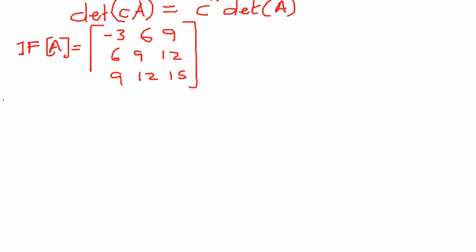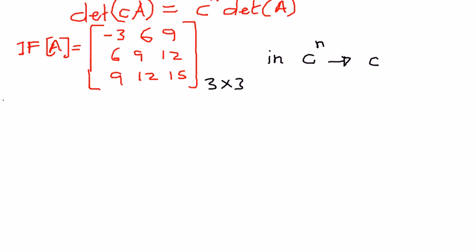To do that, we want to first recognize a few things. The given matrix is a 3 by 3 matrix. In the property, c to the power of n — let us recognize what c and n are here. c here is 3, and n here is also 3. n is the number of rows we have, so we have 3 rows, and the value of c is 3.